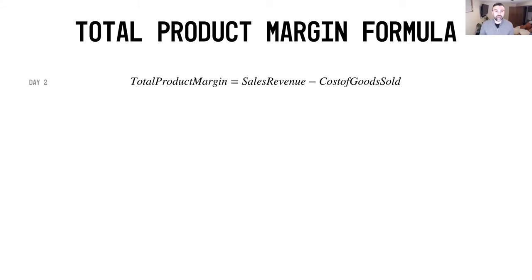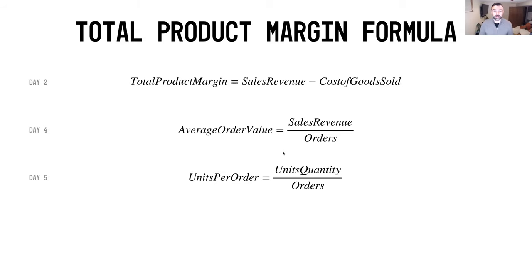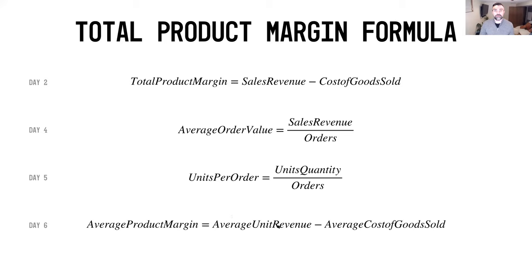To summarize: total product margin equals sales revenue minus cost of goods sold. Then for average order value, that's sales revenue divided by orders, or orders multiplied by average order value. Then we looked at units per order — total units quantity over orders. Finally, average product margin is average unit revenue minus average cost of goods sold to arrive at your average product margin.